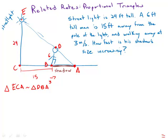So for example, we have the shadow changing. So I'm going to call that S. And then this length from B to C is also changing. I'm just going to call that X.